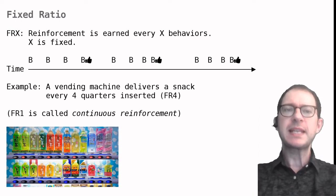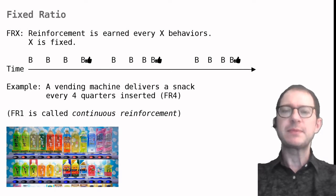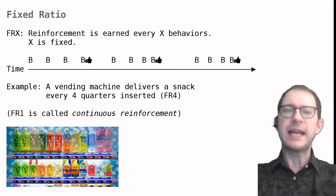Fixed ratio is probably the simplest kind of schedule. Simply, you get your reward every X times you do the behavior. This is described in this timeline where B represents a behavior, and the thumbs up symbol a reward. In this case we have an FR4 schedule, meaning that the behavior is reinforced every fourth time. It does not matter when you do the behavior, only how many times.